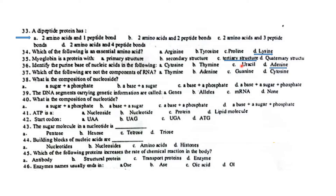Which of the following is not a component of RNA? Uracil is a component of RNA. A nucleoside is composed of a nitrogenous base and a sugar — no phosphate group.